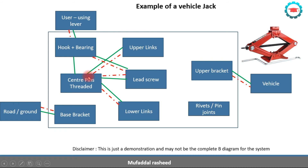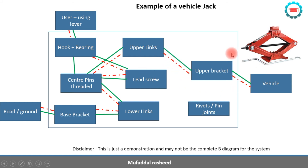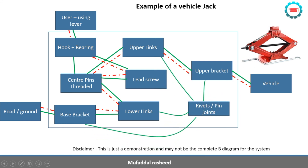The center pins are also connected to the upper and lower links. The pin is connected to the upper link and also to the lower link, so again physical contact and load transfer take place. The base bracket is connected to the lower links through rivets. The upper link is connected to the upper bracket. All of these are connected with rivets — this rivet connects the base bracket to the lower links, and these rivets connect the upper bracket to the upper links.